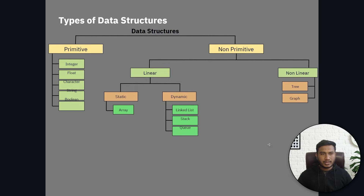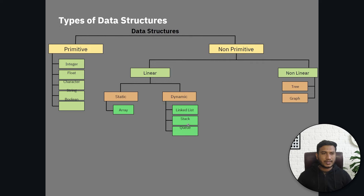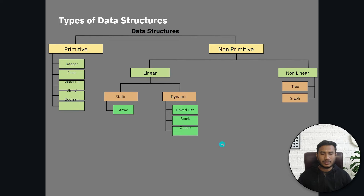When talking about primitive data structure, these are: integer, float, character, string, and boolean. Primitive data structure is very simple. Primitive data structure cannot be broken down into sub-types, but on the other hand non-primitive data structure can be broken down into sub-types. Let's discuss primitive data structure — what is integer, what is float, what is character, what is string, what is boolean.